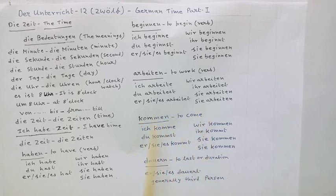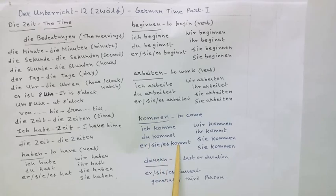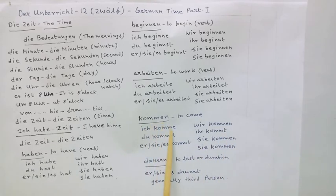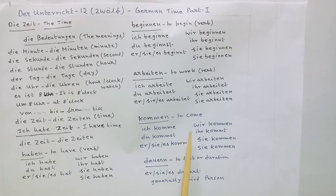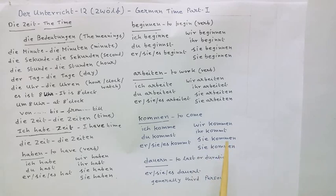Kommen — to come. Ich komme — I come. Du kommst — you come, informal. Er, sie, es kommt — he, she, it comes. Wir kommen — we come. Ihr kommt — you all come. Sie kommen — they come. Sie kommen — you come, formal. That I have discussed in the previous episode.